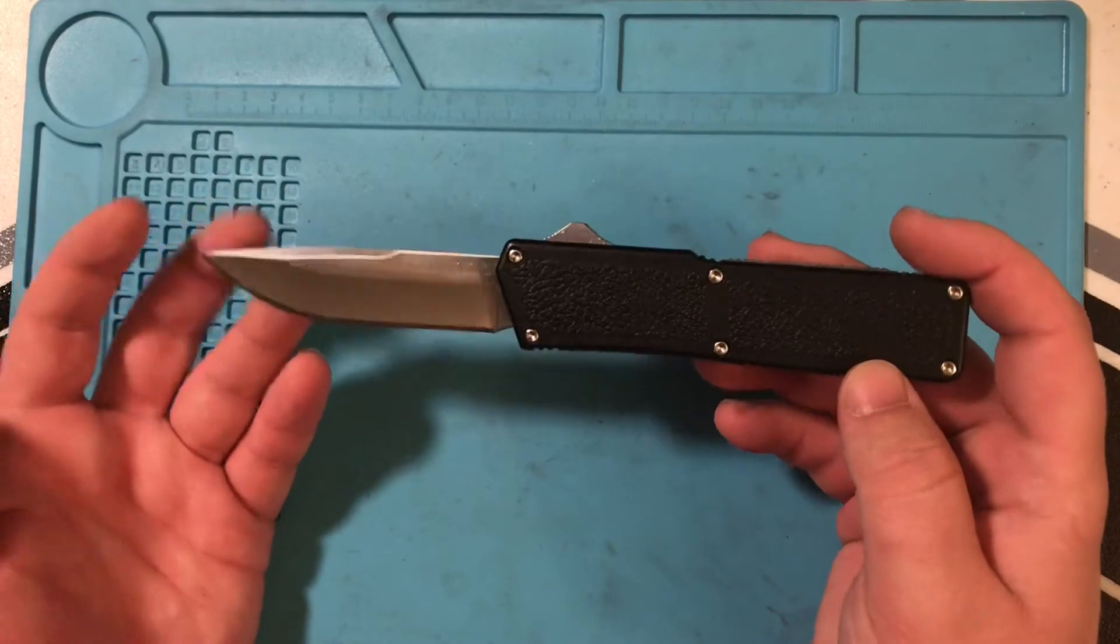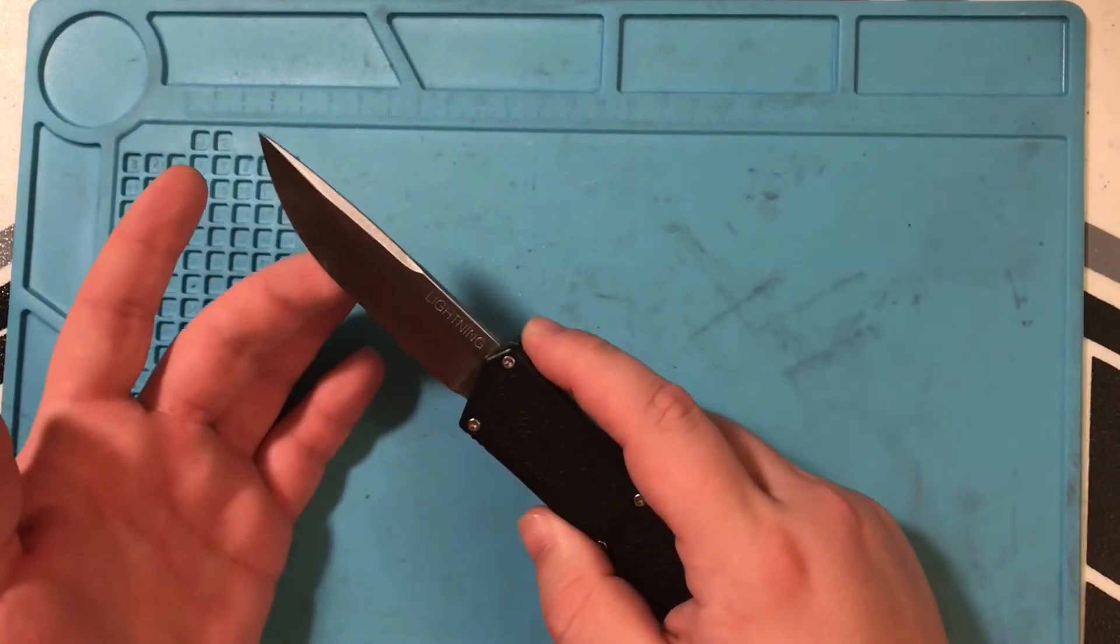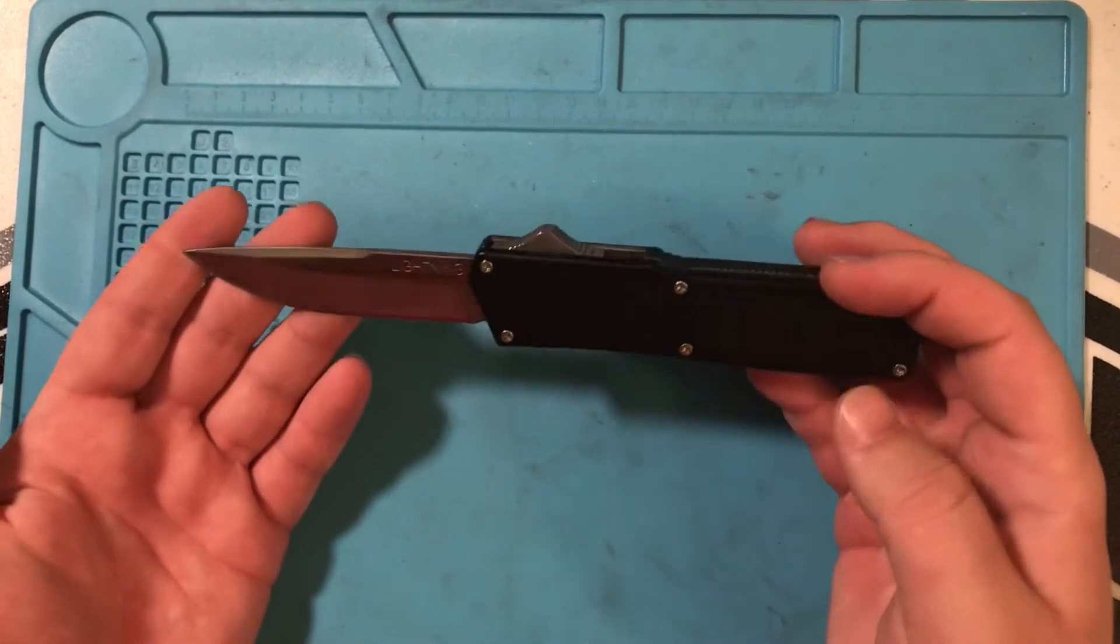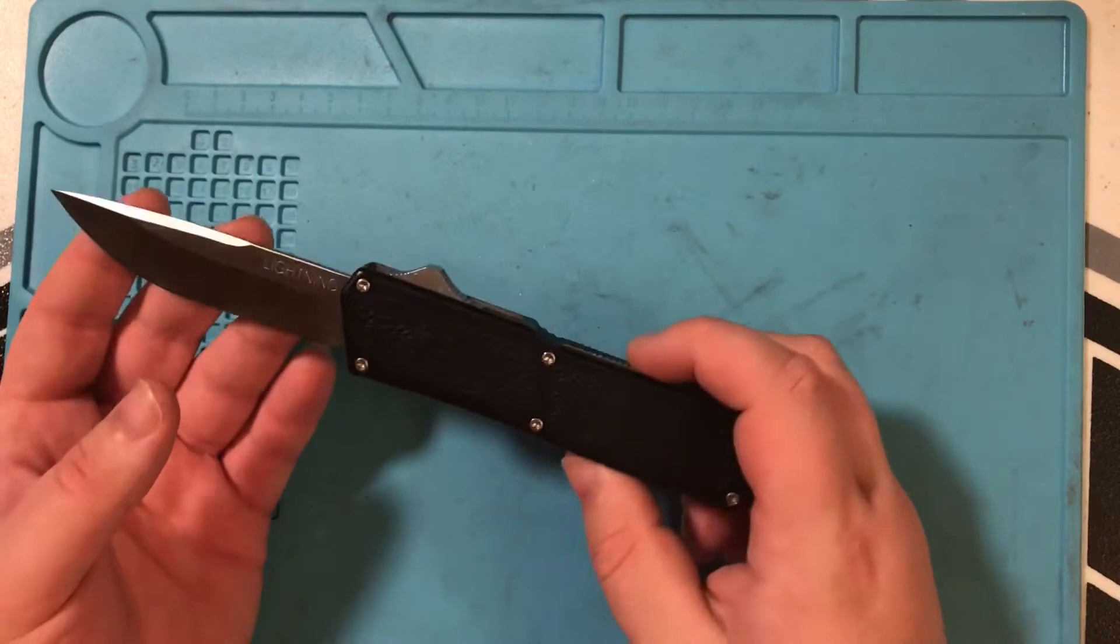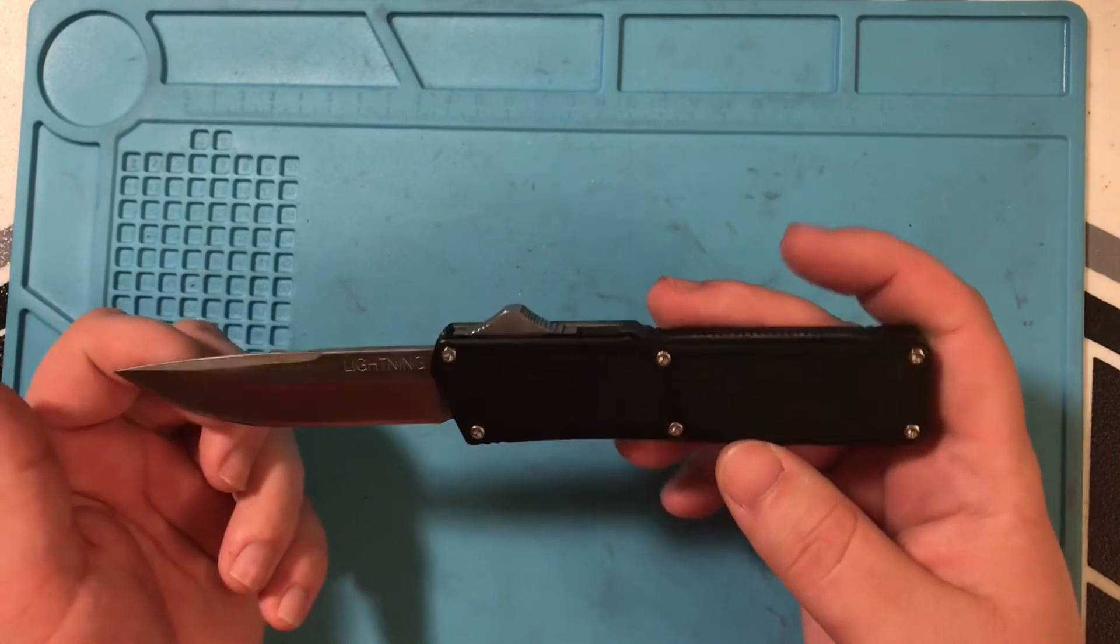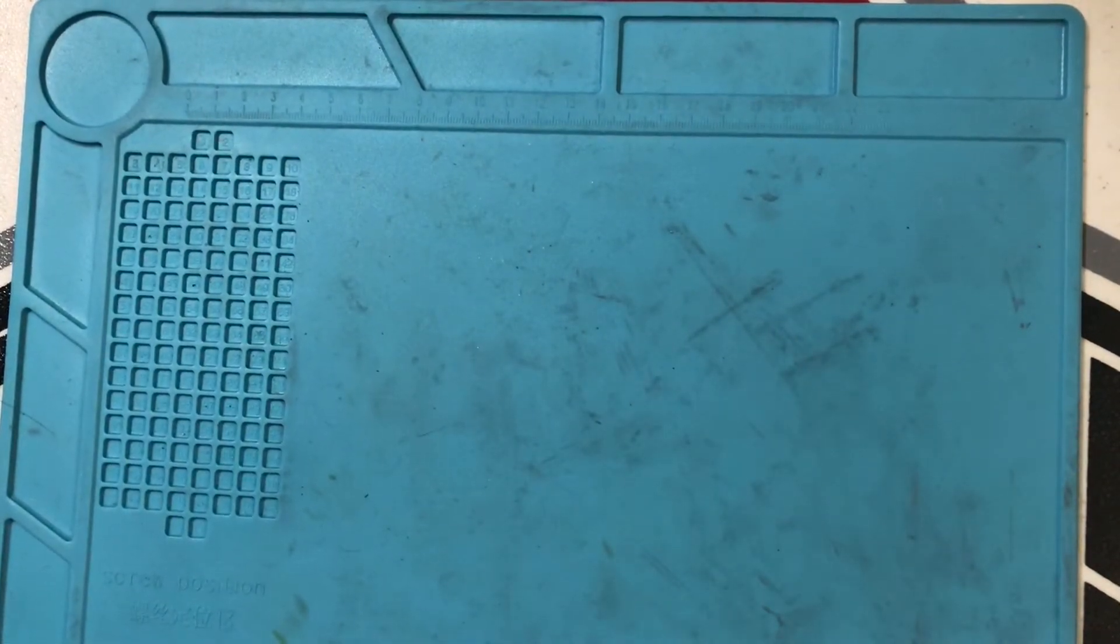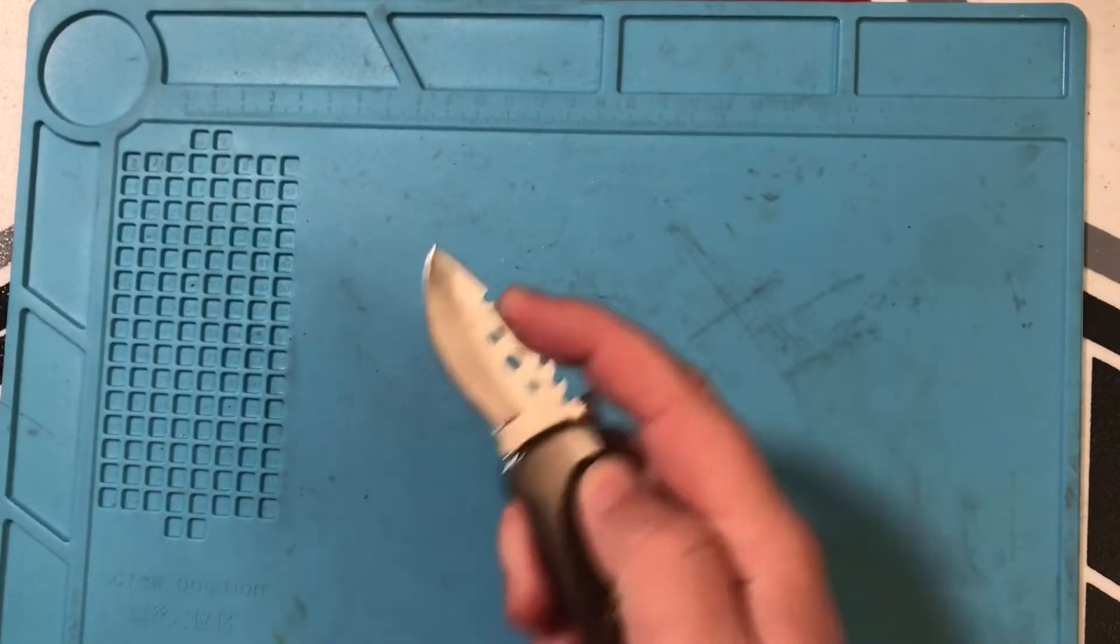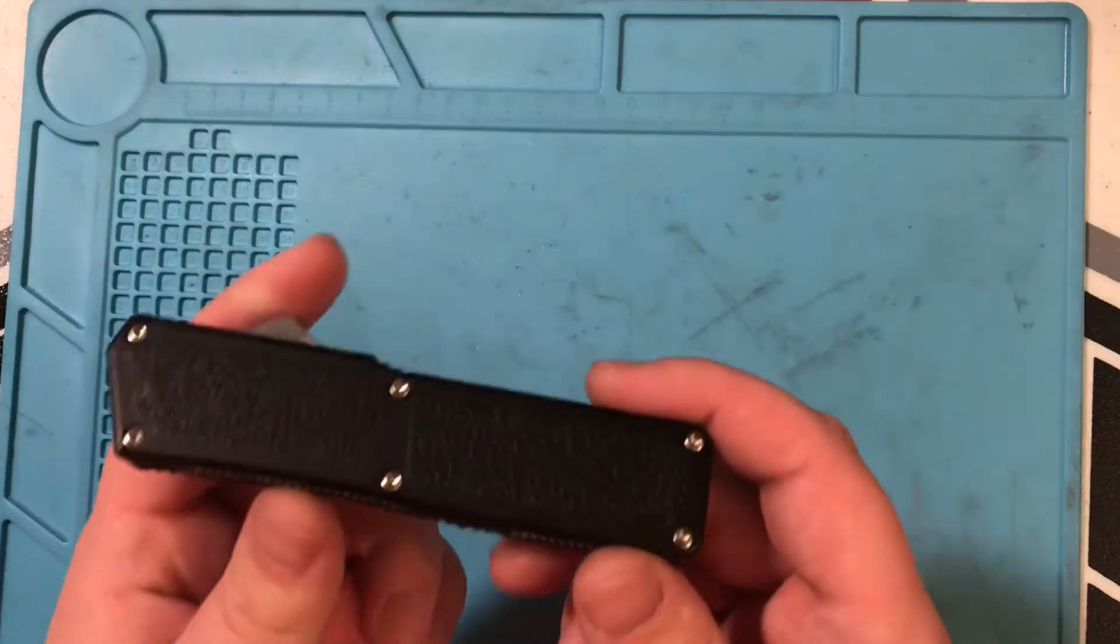So you can usually get these for about like 25 bucks off of the internet. The steel, I have no idea - I heard people say it was like equivalent to 440, I don't know if it was B or C, but 440, maybe 420. I don't use this as much because in Ohio you're technically not allowed to carry them or any automatic knife, even like these push buttons. You're not supposed to carry, but do not tattle on me because I do. I do like it a lot.